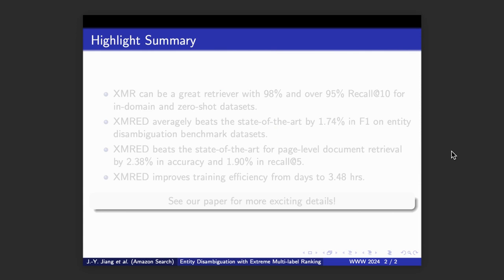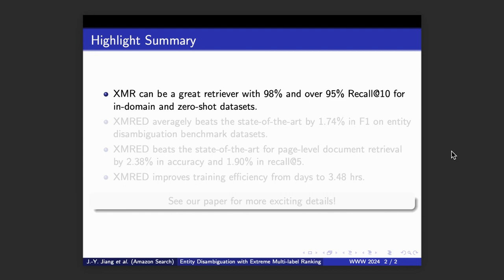Here we summarize some highlights. The Extreme Multilabel Ranking Models can be a good retriever, with 98% and over 95% Recall at 10 scores for in-domain and zero-shot datasets.